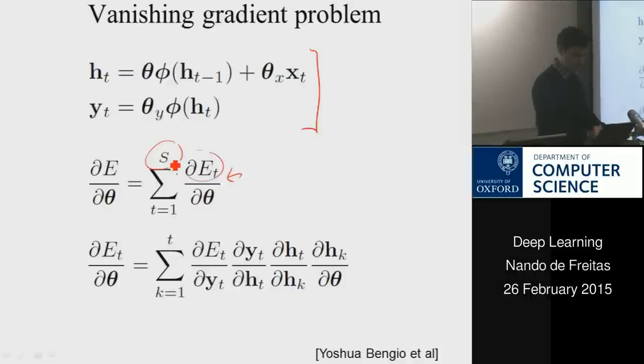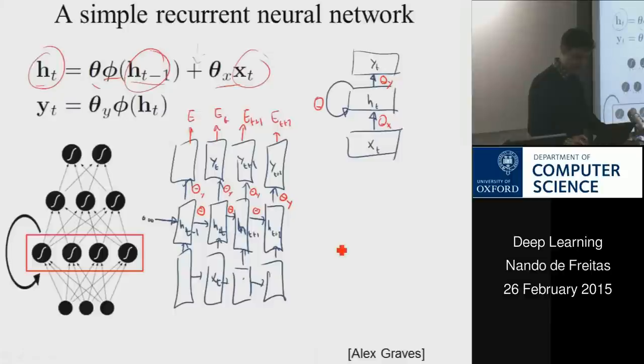So if we go over a horizon of capital S steps, so you unroll this for capital S steps, you would want to minimize that. If you do the chain rule and you want a derivative of, let's just look at one of the terms at time t for now. If you want to compute the derivative of et with respect to, say, the transition parameter theta, then you would have to go from,